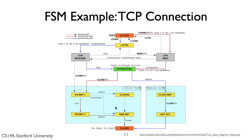TCP transitions from FIN wait 2 to time wait when we receive a FIN from the other side. It then stays in time wait for a period of time until it can safely transition to closed. The final blue edge, from last ACK to closed, occurs when the passive closer's FIN is acknowledged.